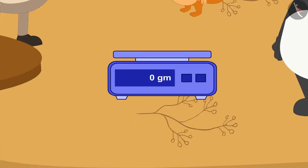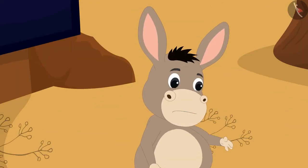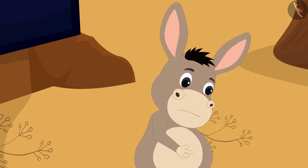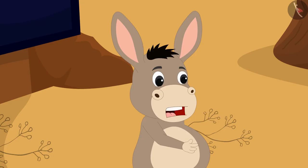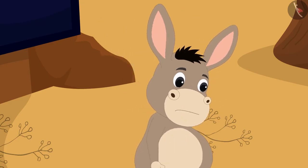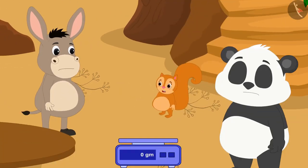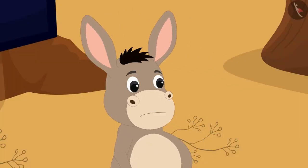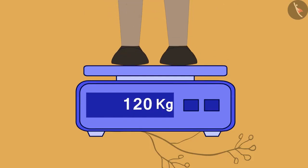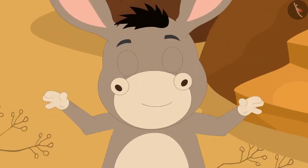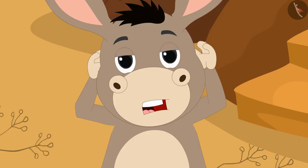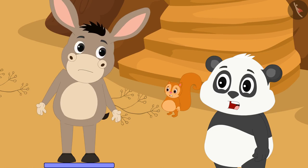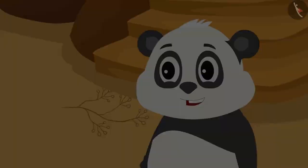Golu said to Chanda, 'Let's first measure our weight so that we can measure our weight again after a few days and know whether our efforts have succeeded or not.' Bola told Golu and Chanda, 'First I will weigh myself,' and stood on the weighing scale.